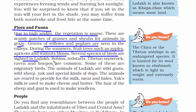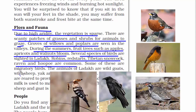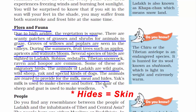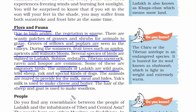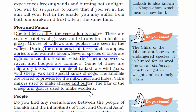Several species of birds are also seen in Ladakh: robins, redstarts, Tibetan snow cock, raven and hoopoe. Some of these are migratory birds, meaning they come from different countries during specific parts of the year. The animals of Ladakh are wild goats, wild sheep, yak and special kinds of dogs. All these animals are thick-skinned, which helps them survive the cold. They are raised to provide milk, meat and hides. People also make cheese and butter from yak's milk, and the hair of sheep and goats is used to make woollen goods.